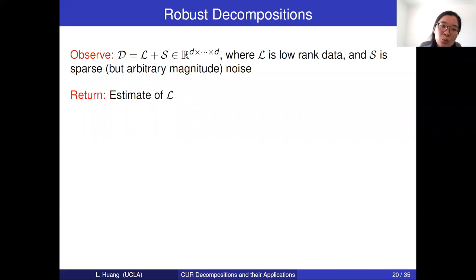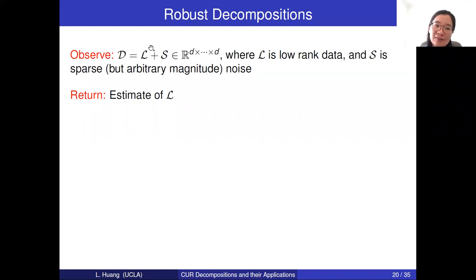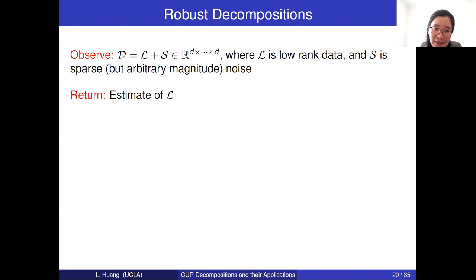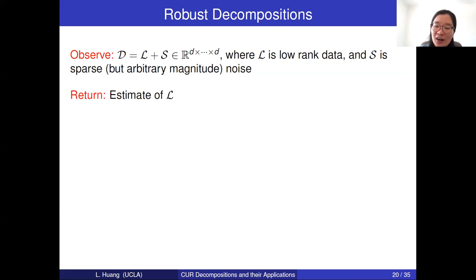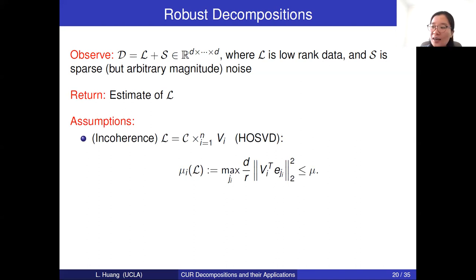Usually for the robust decomposition, we need to make some assumptions on the low-rank and sparse data. Otherwise, for any given low-rank data you can always construct sparse data that makes separation impossible. For example, if the low-rank data L is a matrix with only one non-zero entry (L_{11} = 1), adding sparse noise can easily destroy the rank information. To avoid such extreme cases, we assume the low-rank data has some incoherence — the energy of the singular vector matrices V_i should be evenly distributed, so the incoherence parameter μ_i should be close to one. Similarly, we assume the non-zero entries of the sparse data are evenly distributed on each fiber, characterized by the parameter α.